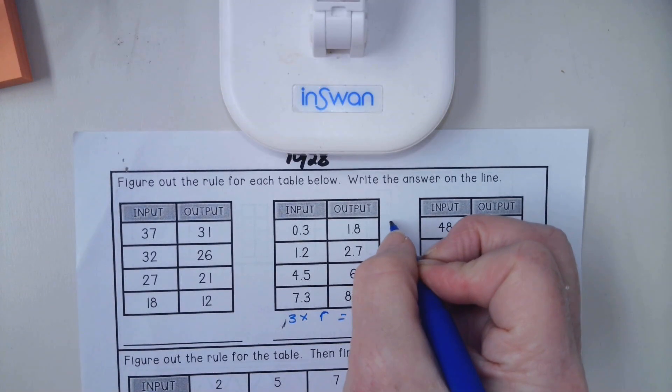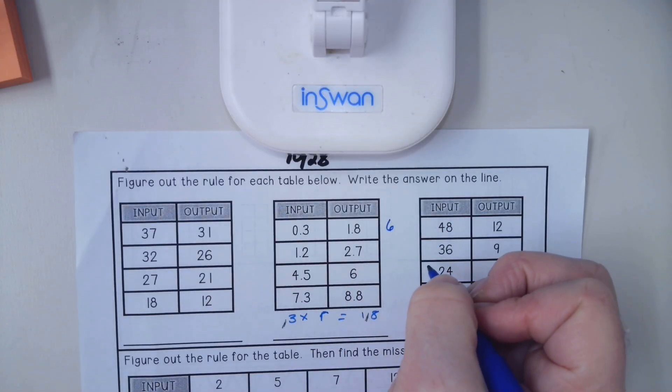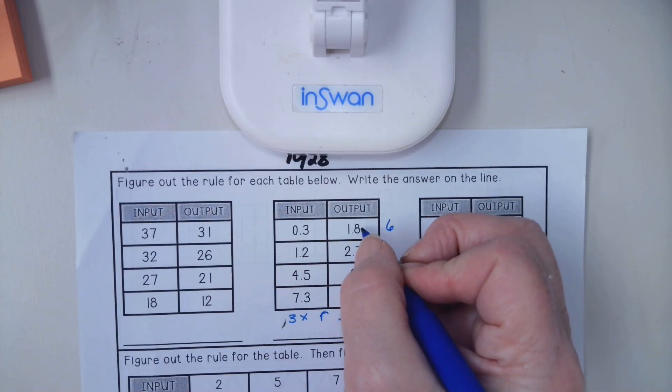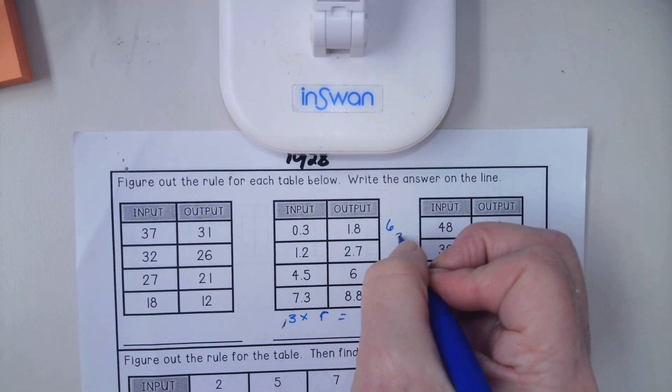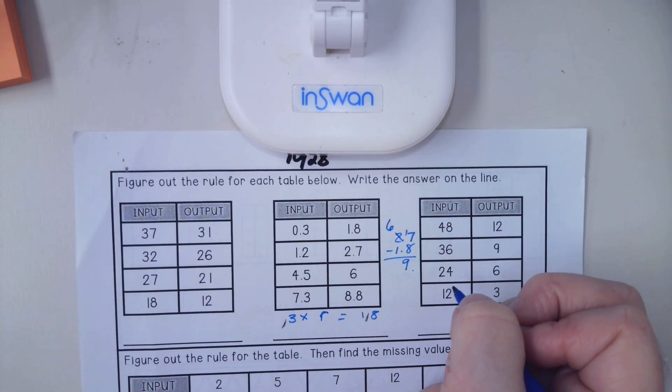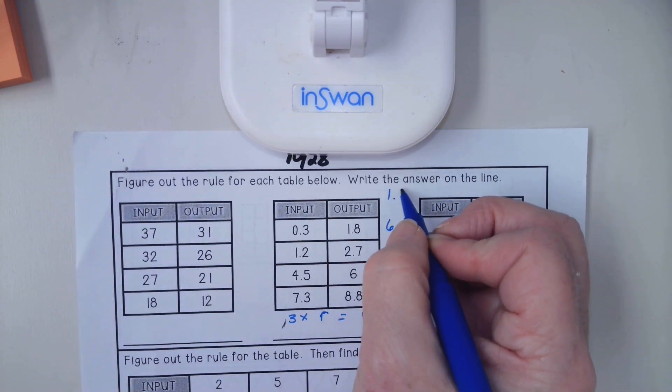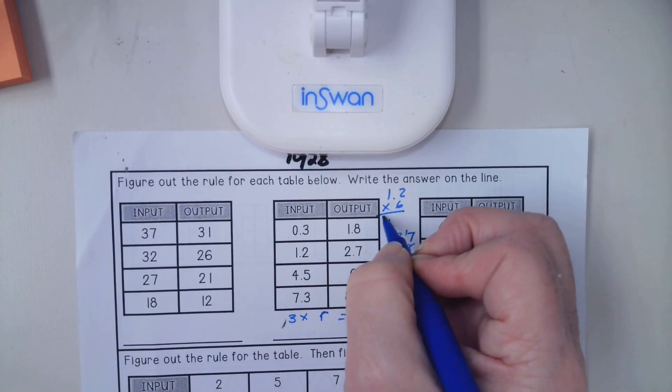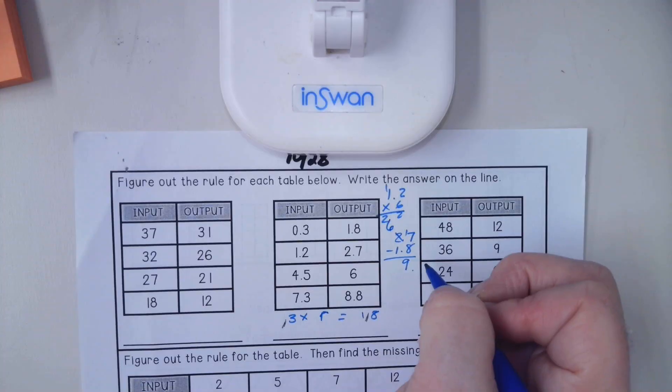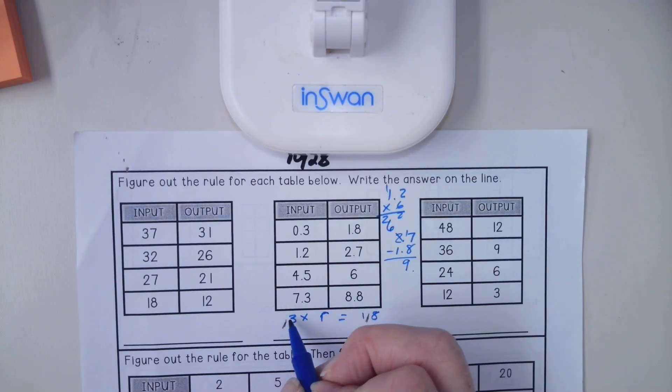So our first guess is going to be 6. 0.3 times 6, let's see if that works. What is the difference between 1.8 and 2.7? 2.7 minus 1.8 gets us 9. Let's see if we do 1.2 times 6, we get 12.6. Hmm, you know what? This is not multiplication. My rule does not work.